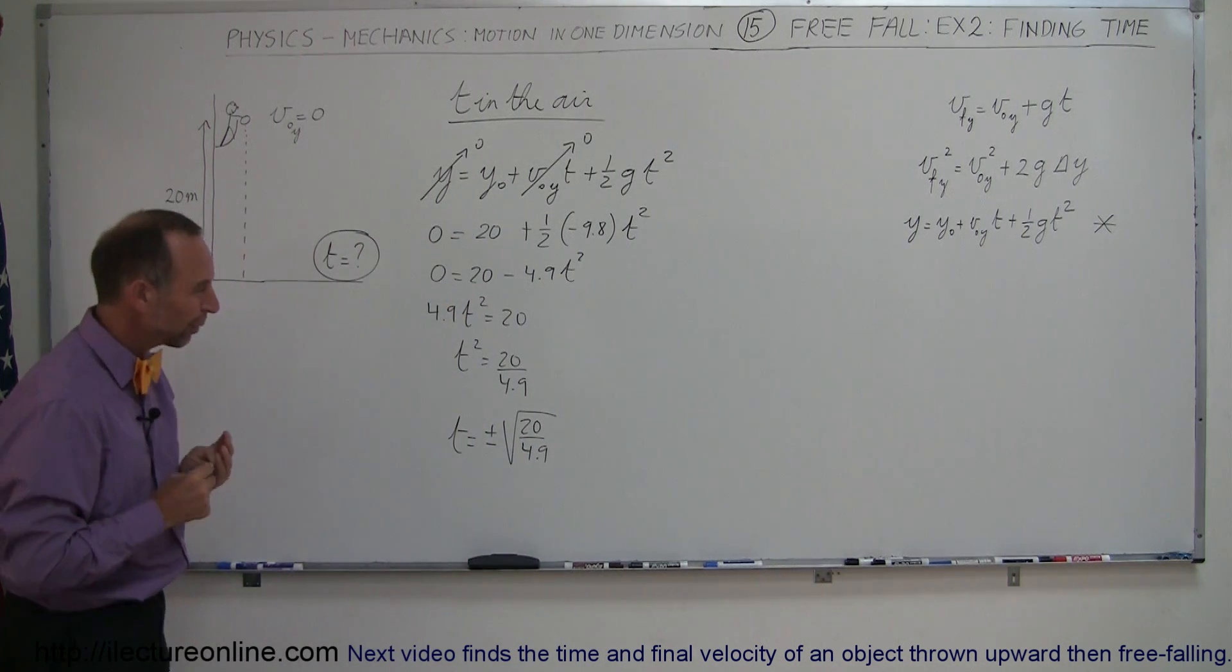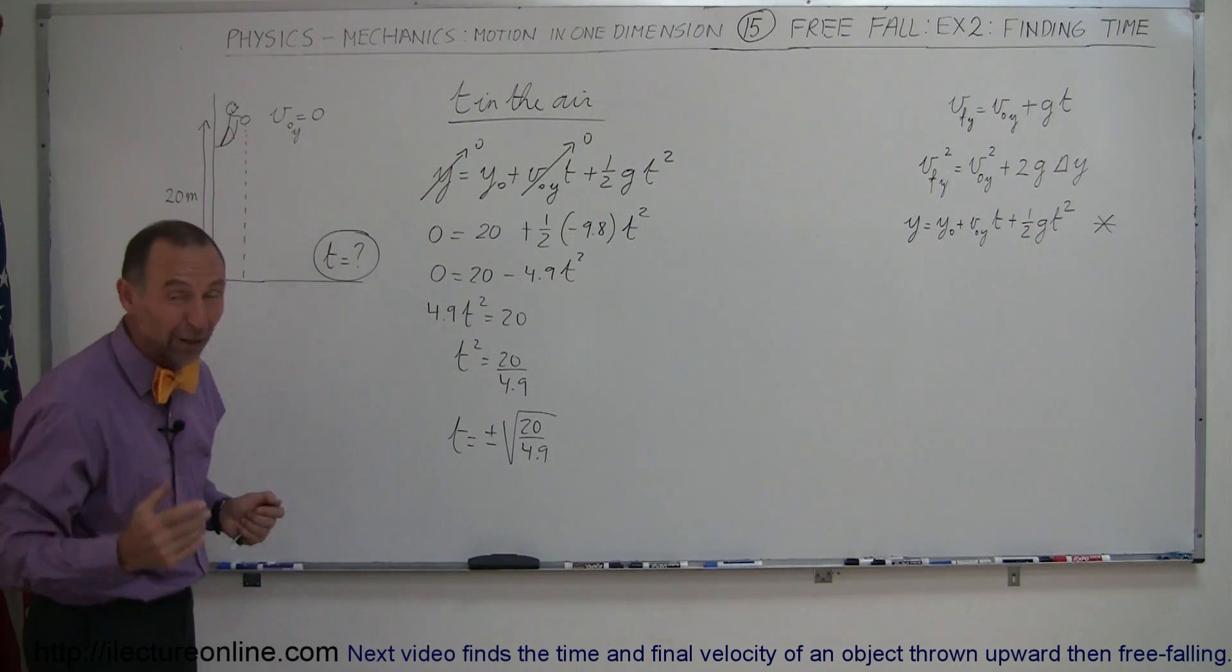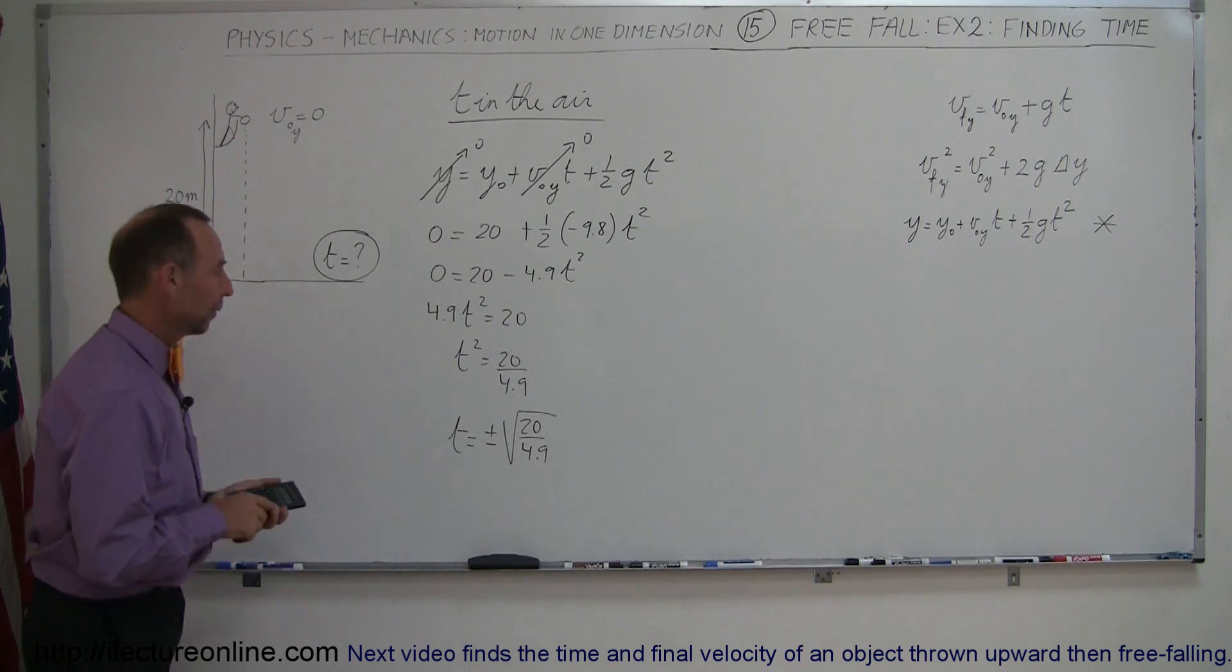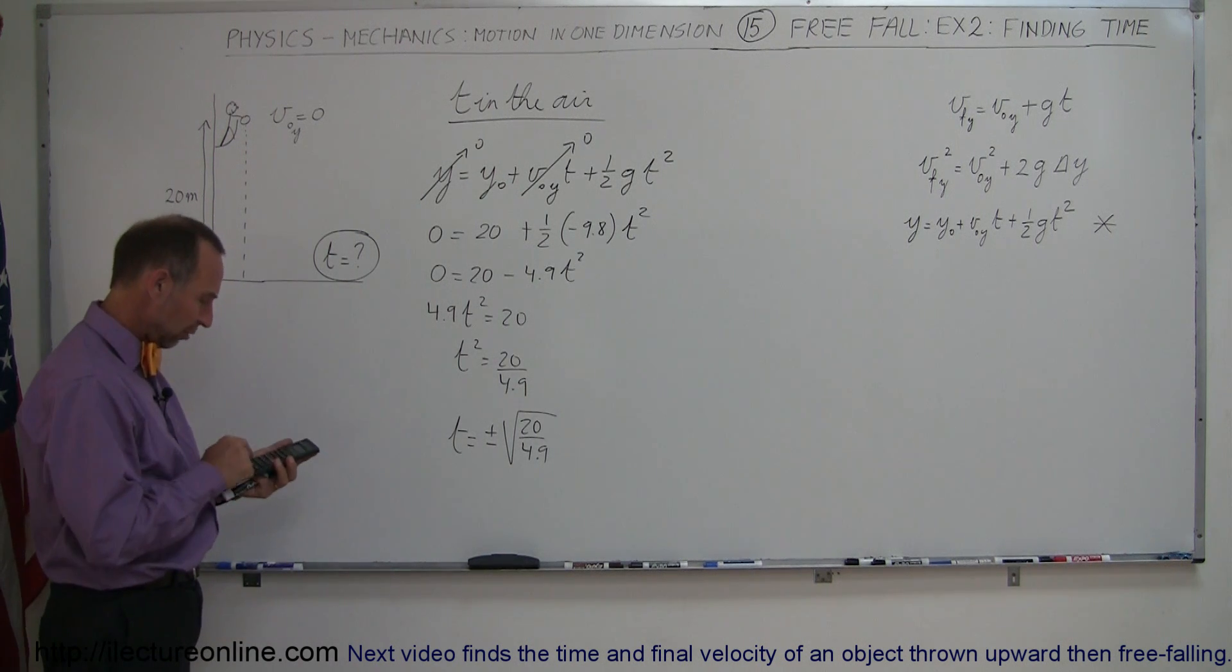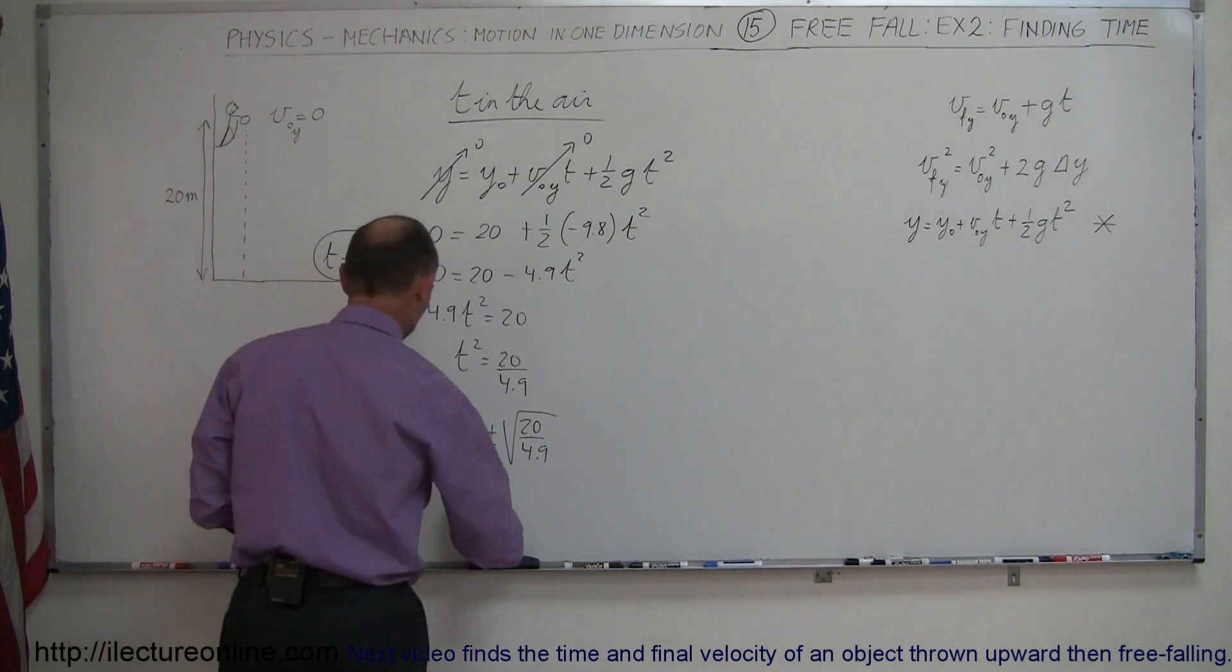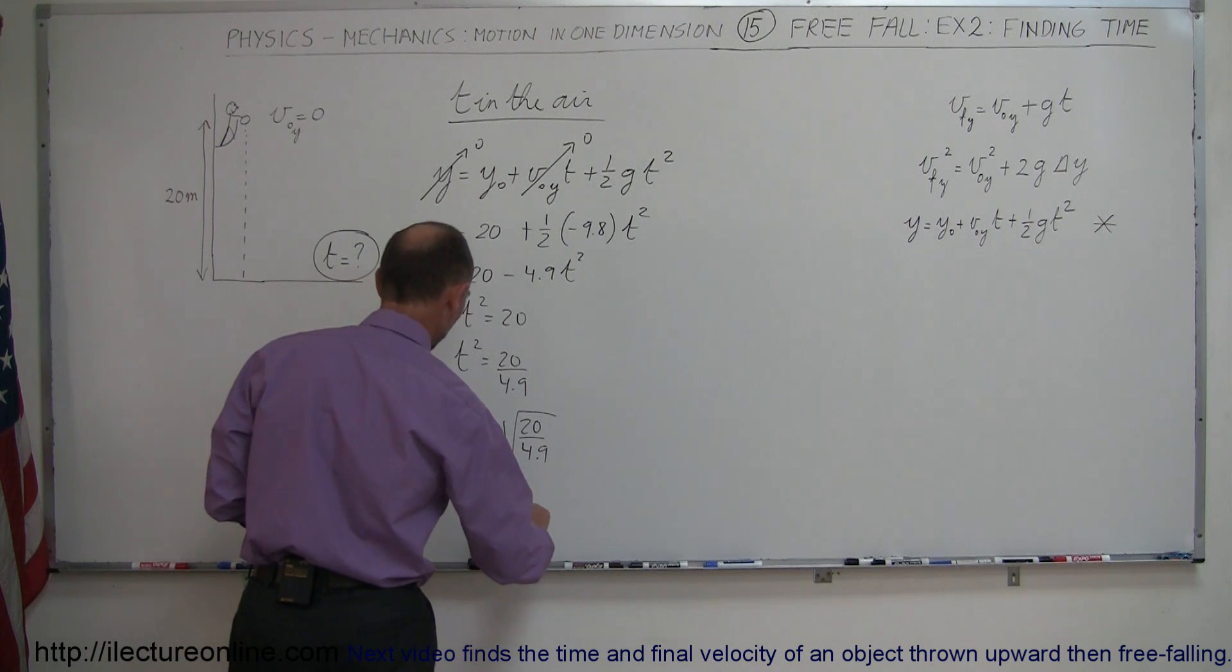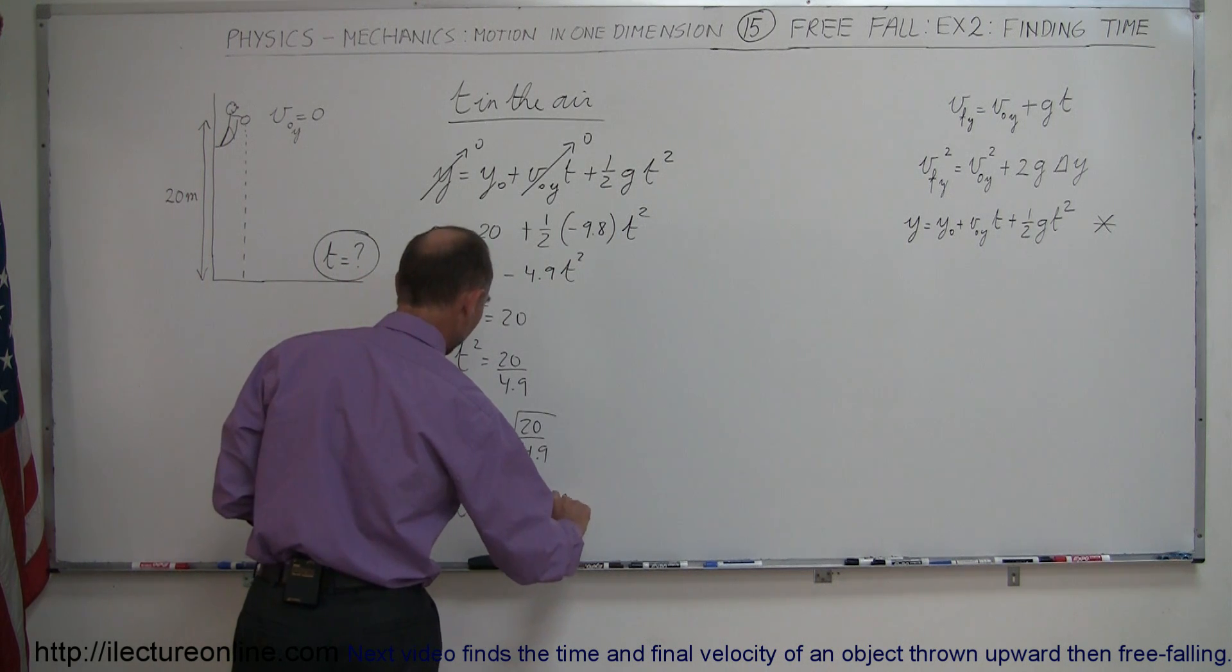You say, why plus or minus? Well, it's always a good idea to have both answers there, and now we'll just pick the right one, whatever makes sense. So I have 20 divided by 4.9, take the square root of that, and we get 2.02 seconds. So t is equal to 2.02 seconds.